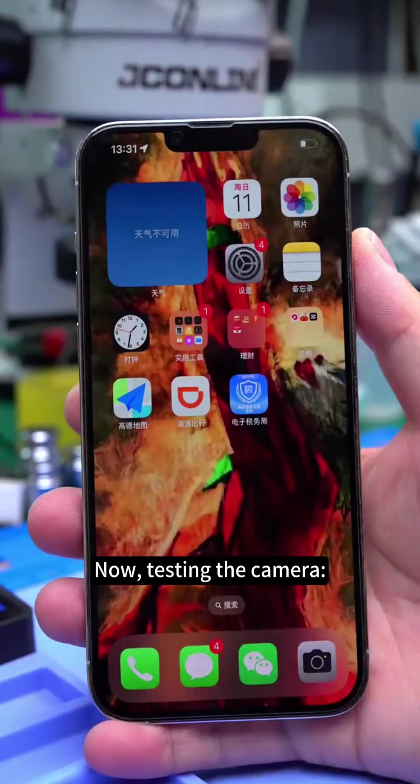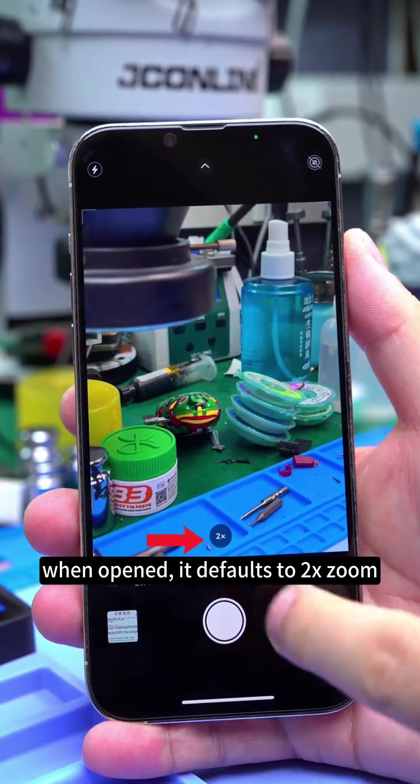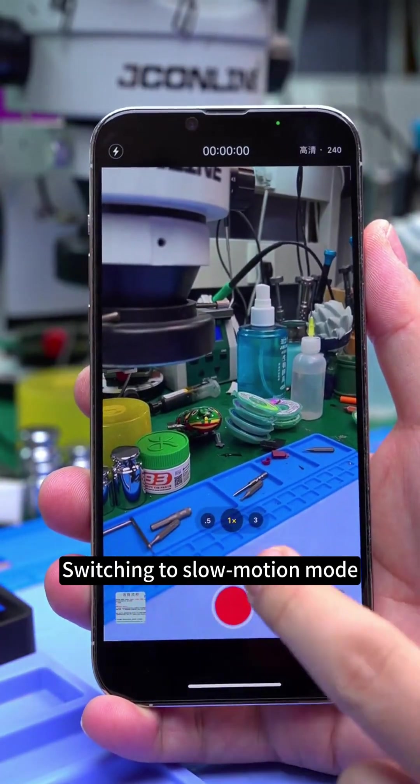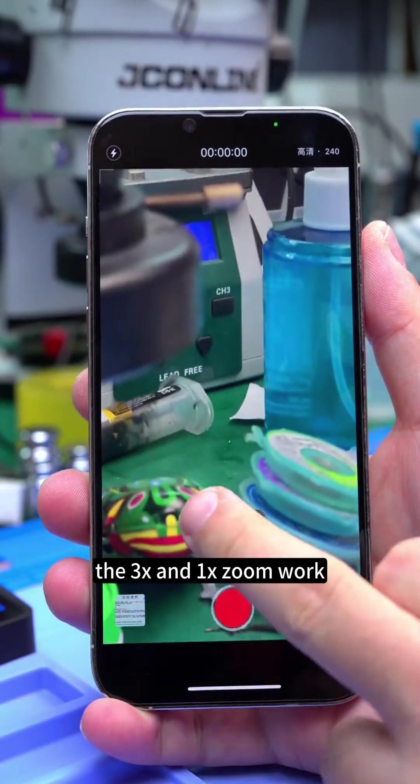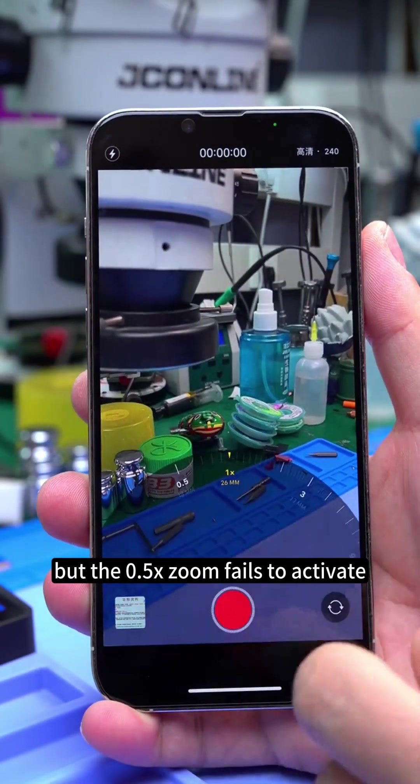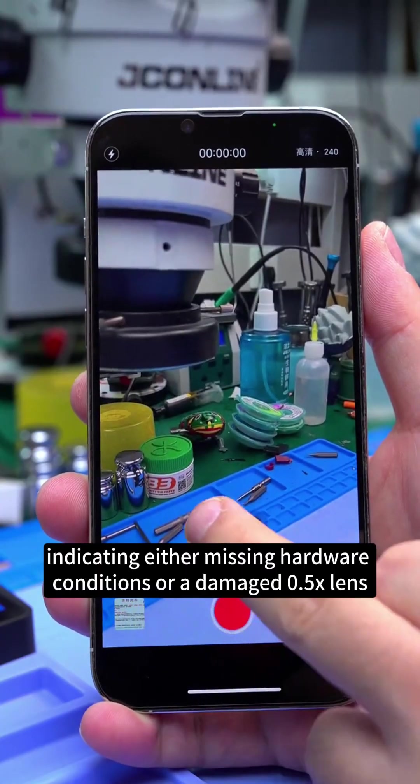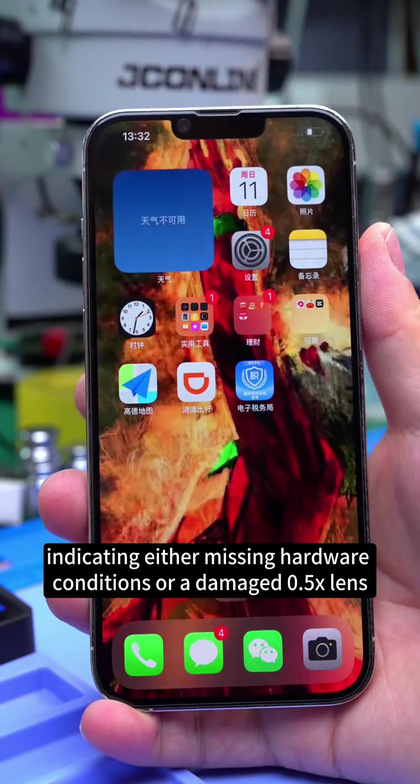Now testing the camera. When opened it defaults to 2x zoom. Switching to slow motion mode, the 3x and 1x zoom work, but the 0.5x zoom fails to activate, indicating either missing hardware conditions or a damaged 0.5x lens.